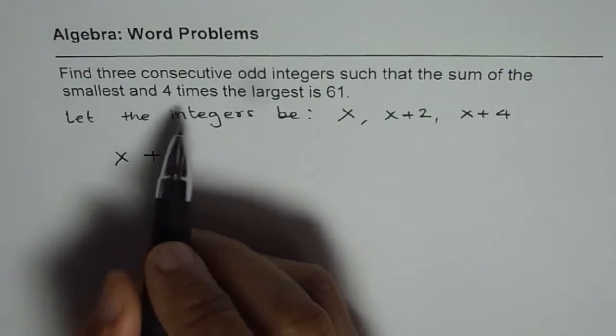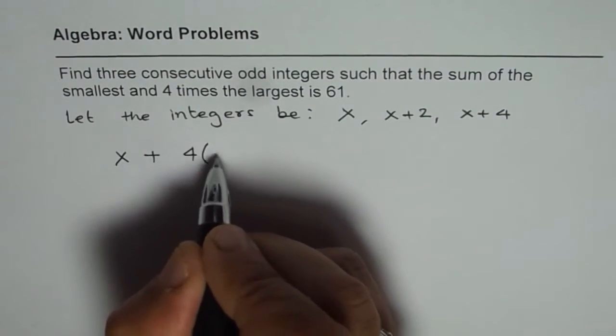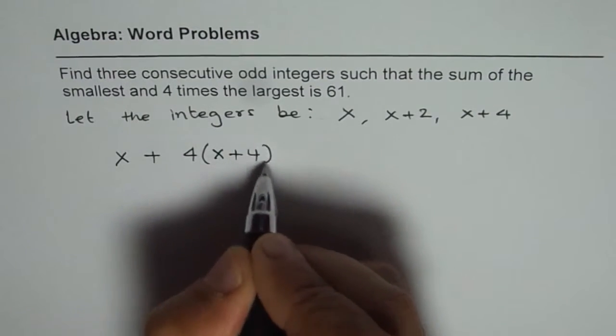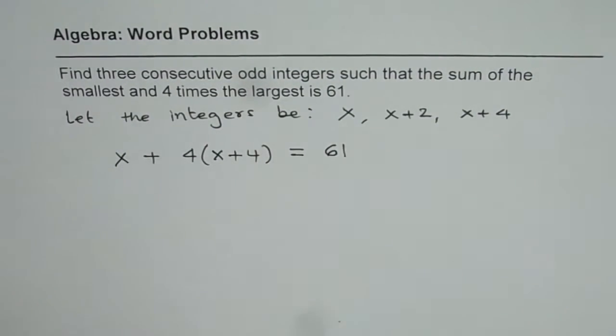and plus 4 times the largest - 4 times (x+4) - equals 61. Correct?